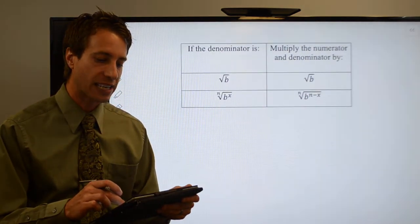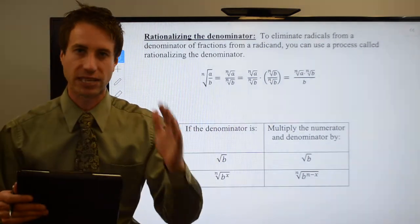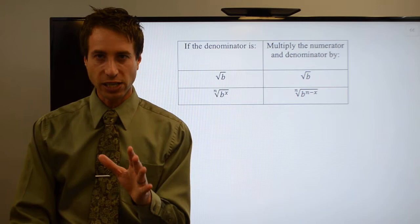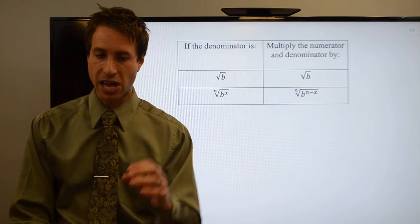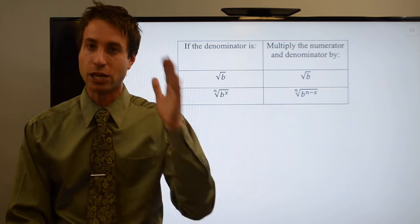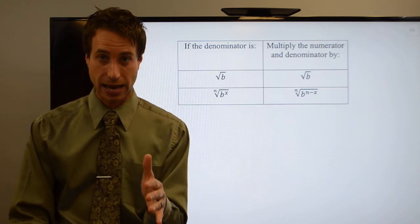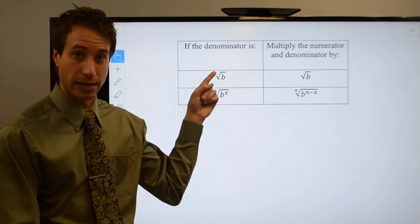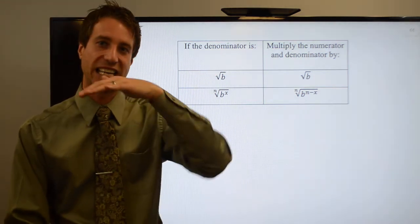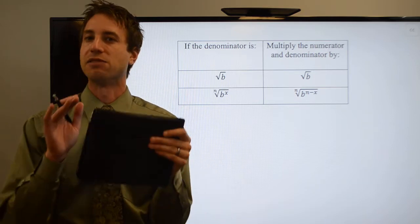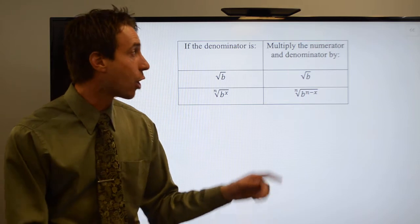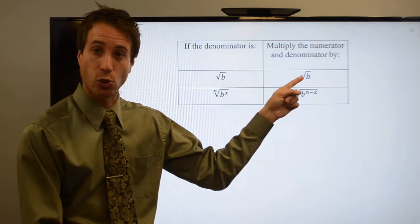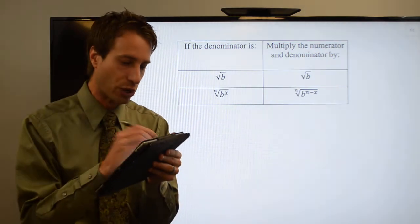Here's what you guys are going to need to be able to do. This is good stuff, but the book definition is technical, so just take a look at the table. The first thing you're going to do is look at the problem you've been given and immediately check the index. What is the index? If the index is a 2 — meaning it's not written because a 2 is implied — so if all you have is the square root of something in the denominator, it's very, very simple.